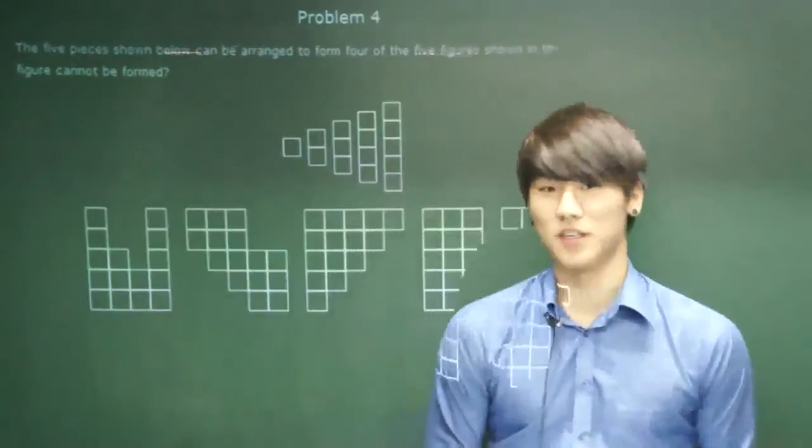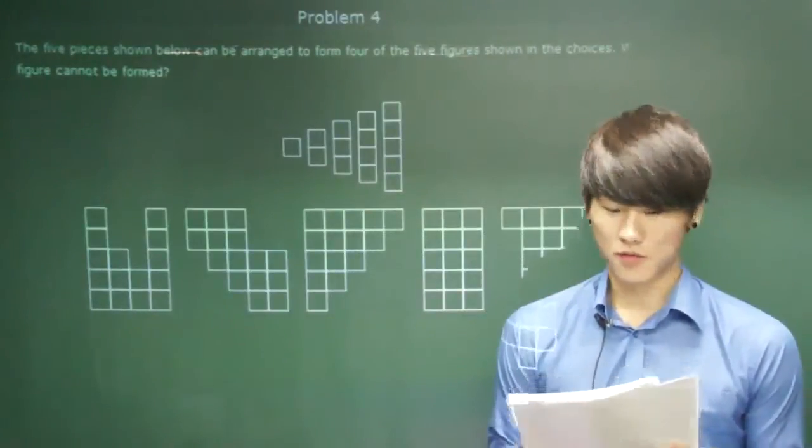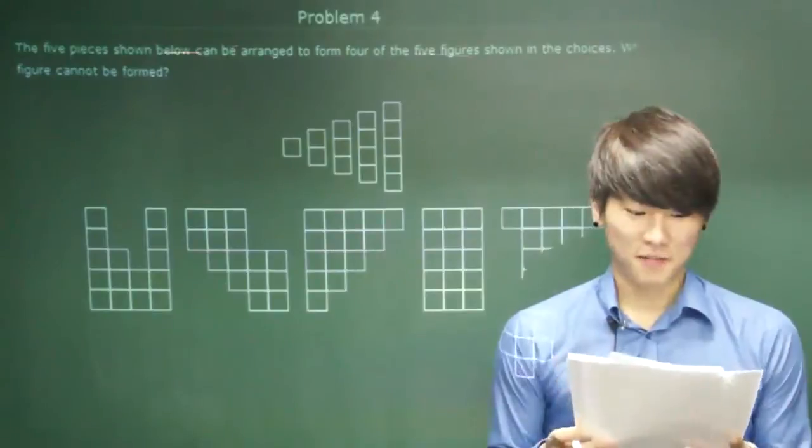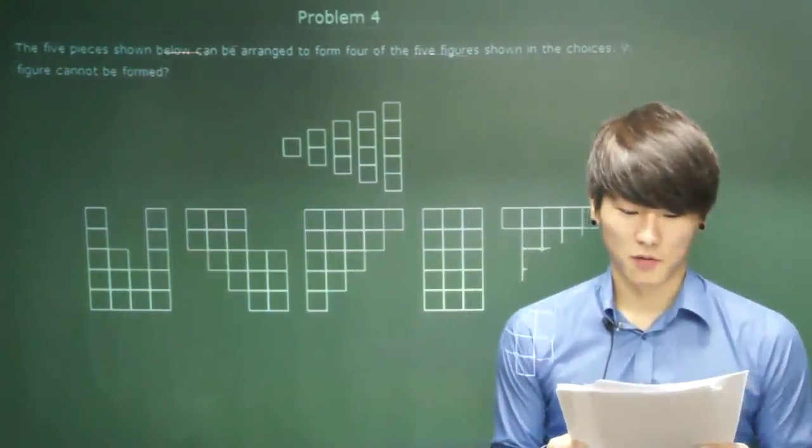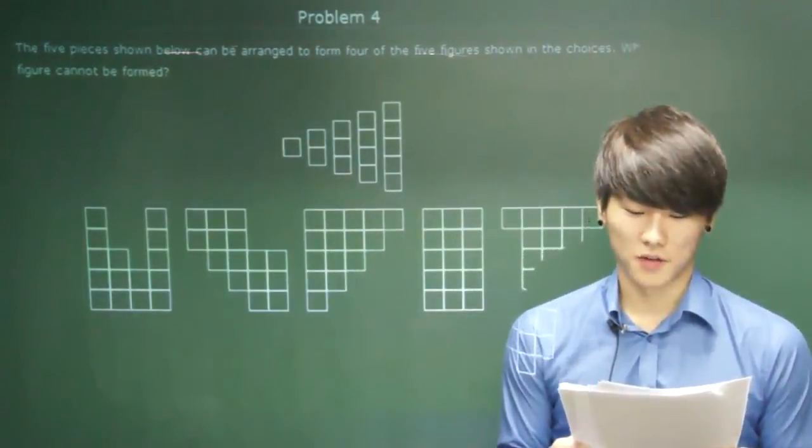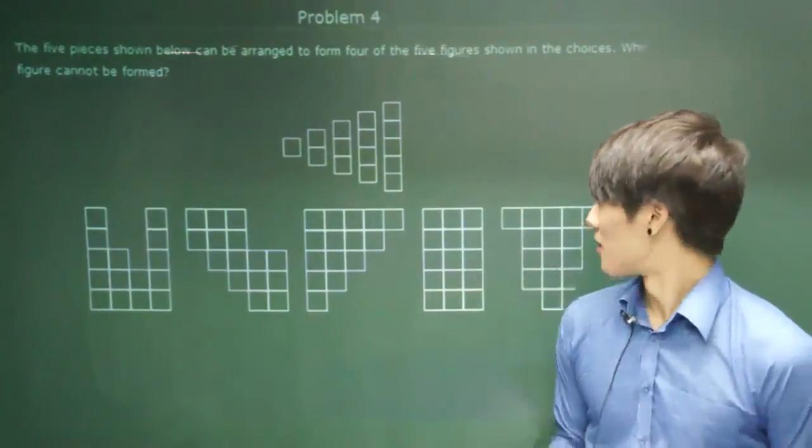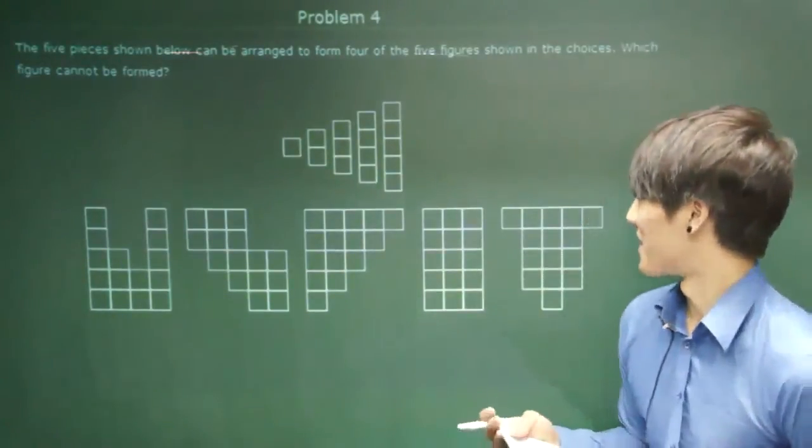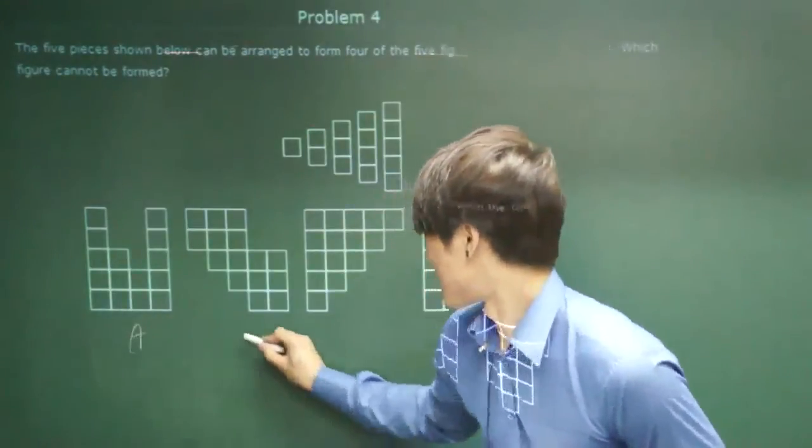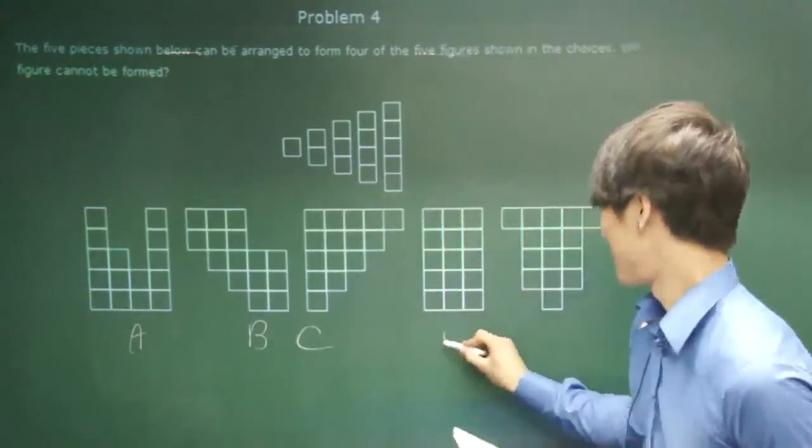Next question. Question number four. The five pieces shown below can be arranged to form four of the five figures shown in the choices. Which figure cannot be formed? Okay, I'm guessing this is A, B, C, D, and E.